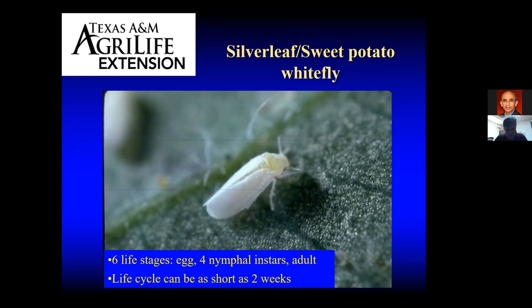This insect has six life stages, including an egg, four nymphal instars, and the adult stage. When we're trying to control this insect, we are targeting primarily the adults, but in some cases we are trying to get insecticides on those nymphs to kill them. The best way to do that is with something systemic — something that would move through the tomato plant and kill that nymphal instar.